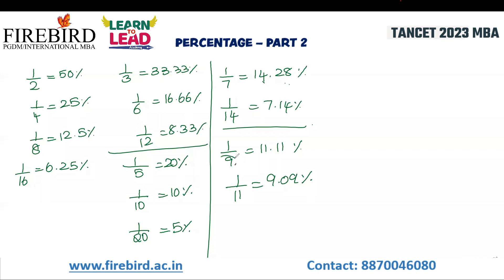1 by 9, 11.11 percentage. Suppose if you think about it, what is 72.72 percentage of 3,300? Solve it.